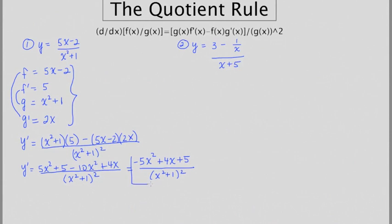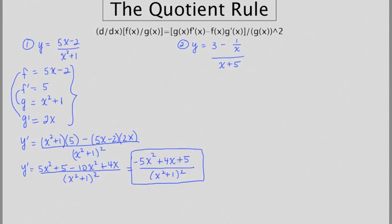And this is it. This is a very typical looking answer when you're using the quotient rule. It's not unusual to have this denominator squared, and you're not going to want to foil that out — just leave that alone. So let's try a second one.